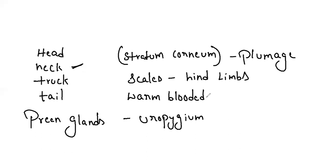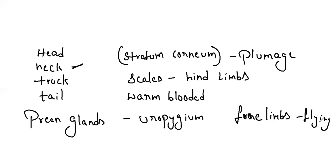There are two pairs of limbs and birds are feathered bipeds. The forelimbs with three digits are modified into wings, which helps for flying. Four clawed digits are present in the hind limbs, best adapted for perching, walking on land, or swimming in water. Some body parts are minimized or modified for flight.